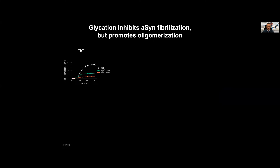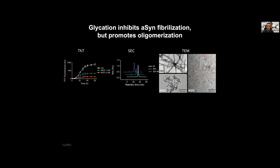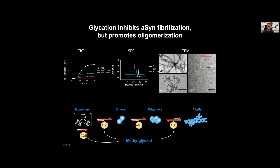Using in vitro studies with recombinant protein, we found that adding increasing concentrations of methylglyoxal reduced what seemed to be amyloid fiber formation by alpha-synuclein. This was a bit surprising — we were thinking we would see an increase in aggregation. But using complementary techniques like size exclusion chromatography or electron microscopy, we found that the size of the species obtained upon glycation was increasing, though they were not forming the typical amyloid structure. We detected the accumulation of species compatible with oligomeric species, suggesting glycation promotes accumulation of oligomers and not necessarily amyloid fibrils.